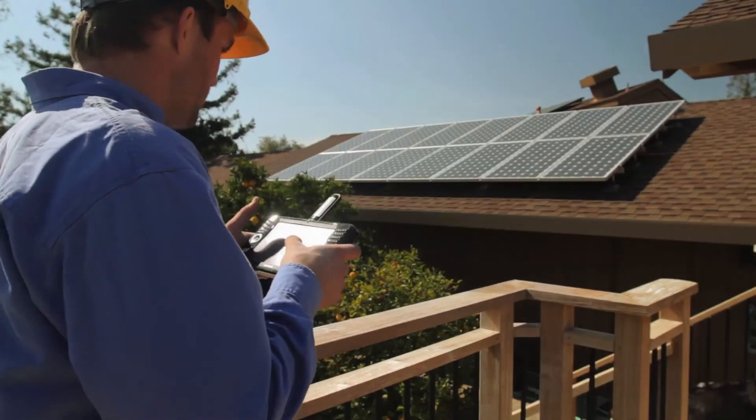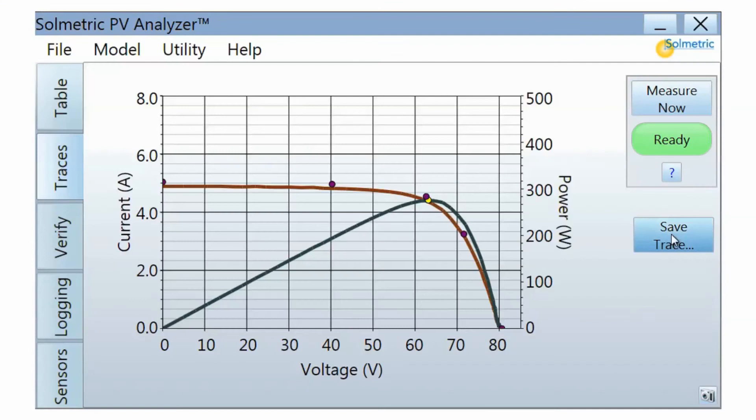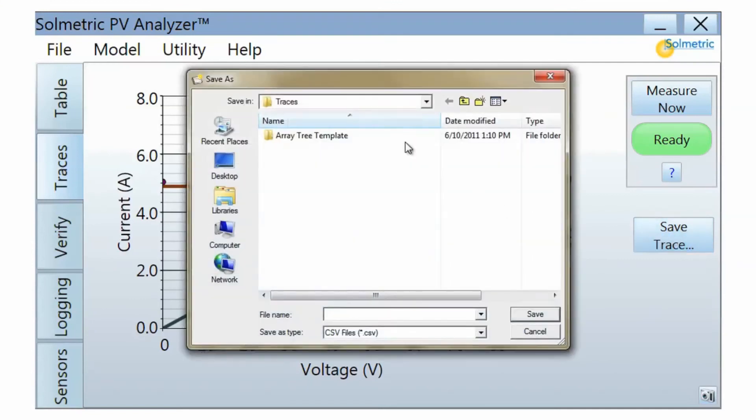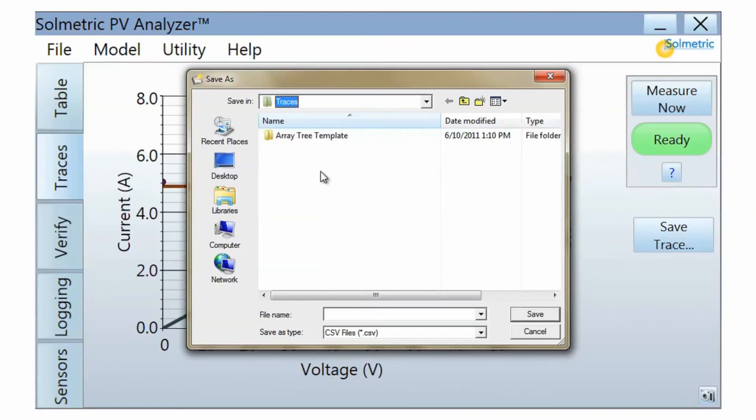When you test arrays, always save your data in an array tree. The array tree is a Windows Directory tree that matches the architecture of the PV array. A template is provided in the Traces folder. Make a copy of the template and rename the top-level folder with the name of your site.